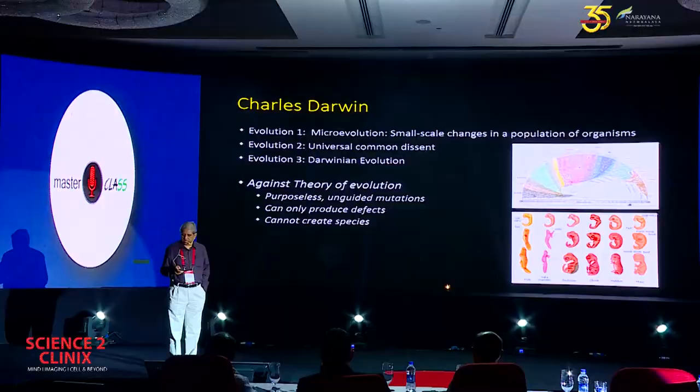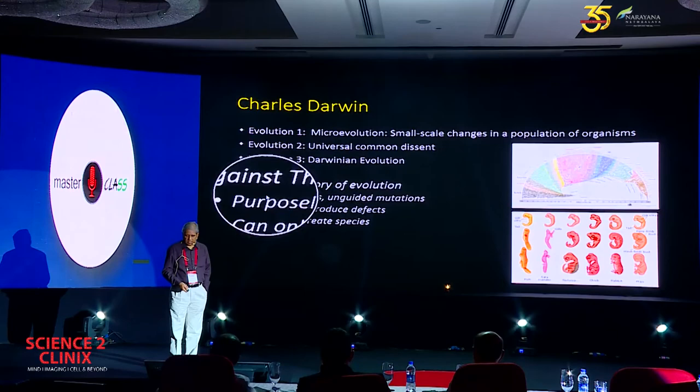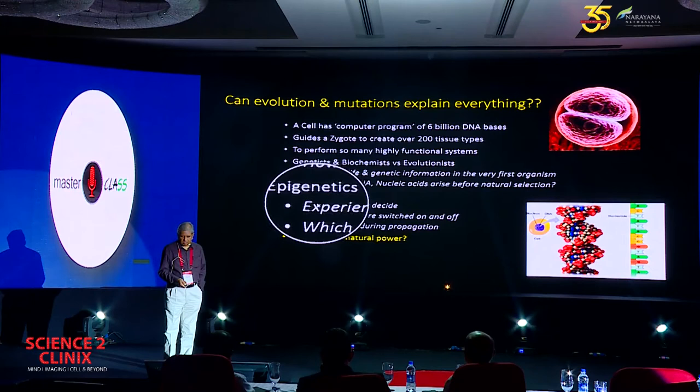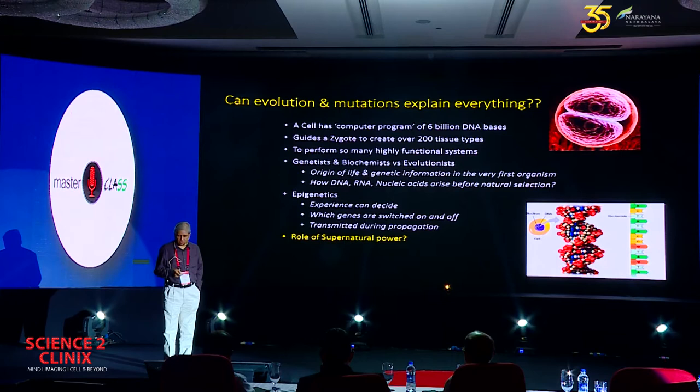He proposed three theories — evolution one, evolution two, and evolution three, which is Darwinian evolution. Is it true? There are a lot of people who say it may not be true — that unguided purposes can only produce defects and cannot produce a new species. Can evolution and mutation explain everything? I don't think so. Because experience can decide which genes are switched off and which genes are switched on — that's epigenetics. These switched-on and switched-off genes are transmitted down to the offspring, and learning itself can be transmitted that way.